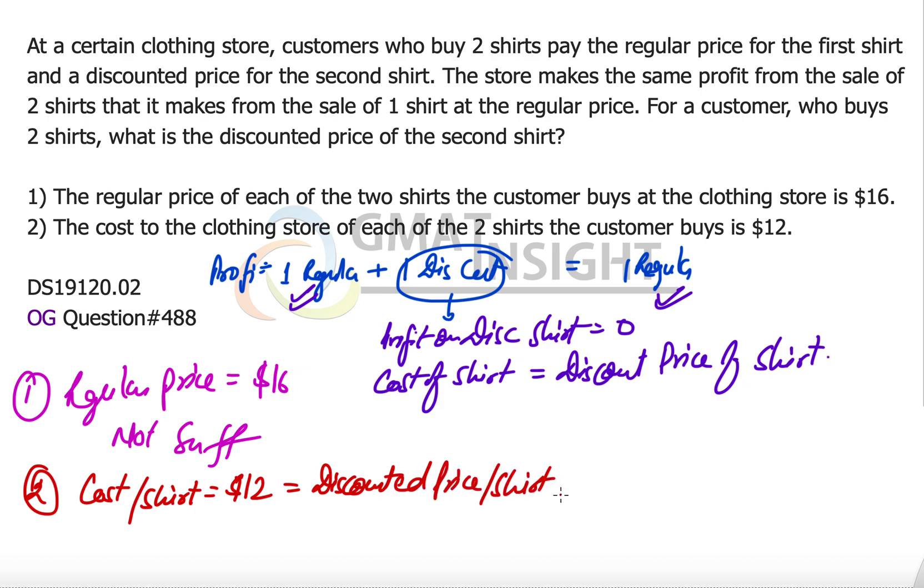And now we have the unique answer to the question. Therefore, the second statement alone is sufficient to answer the question, and the answer to the question becomes option B, which states that the second statement alone is sufficient but the first alone is not sufficient.